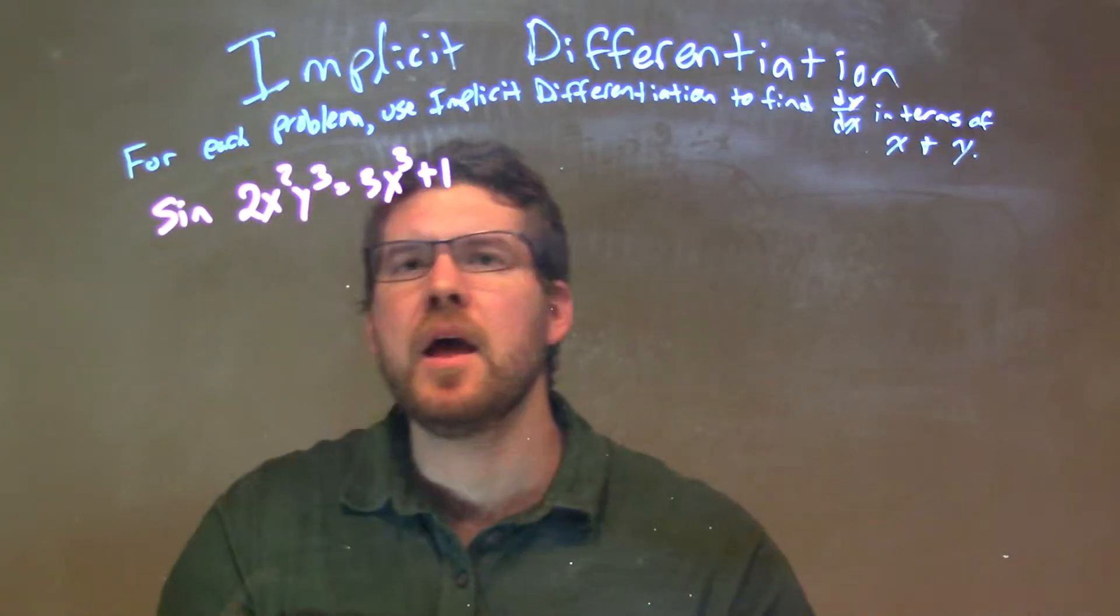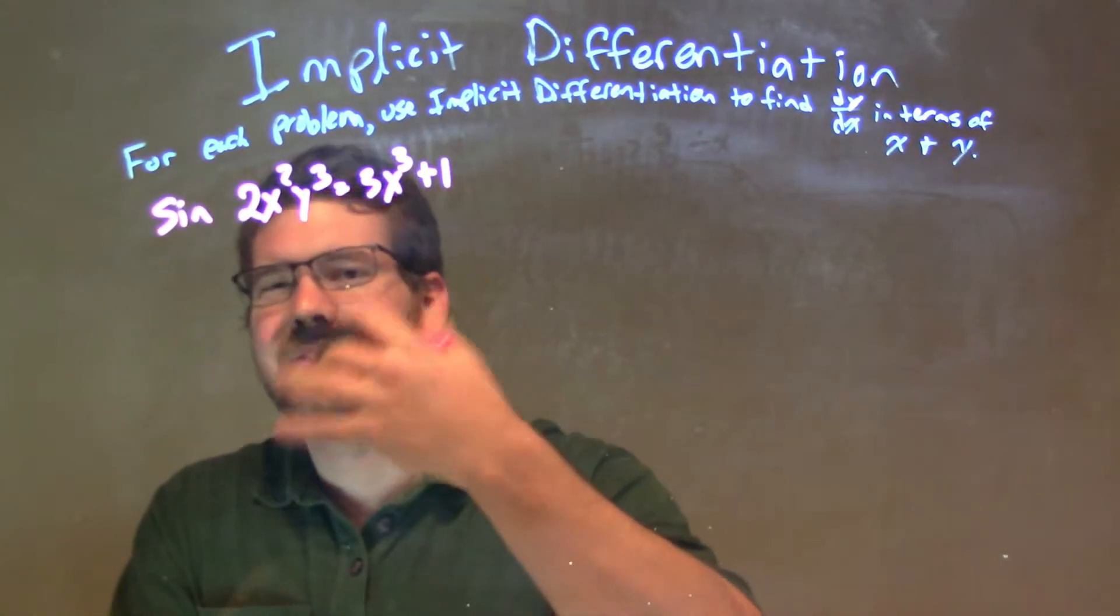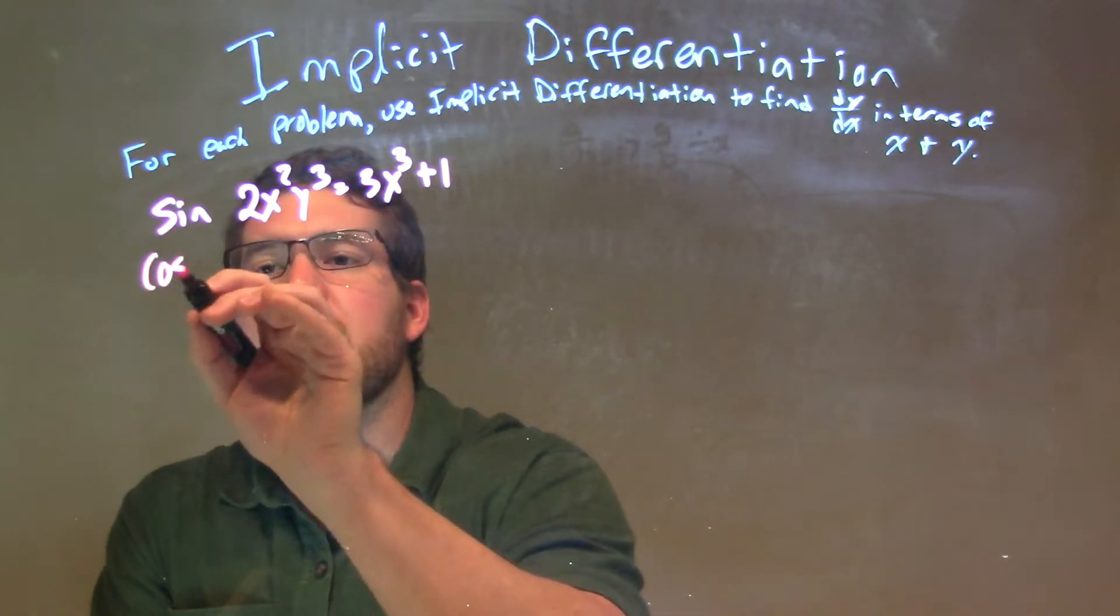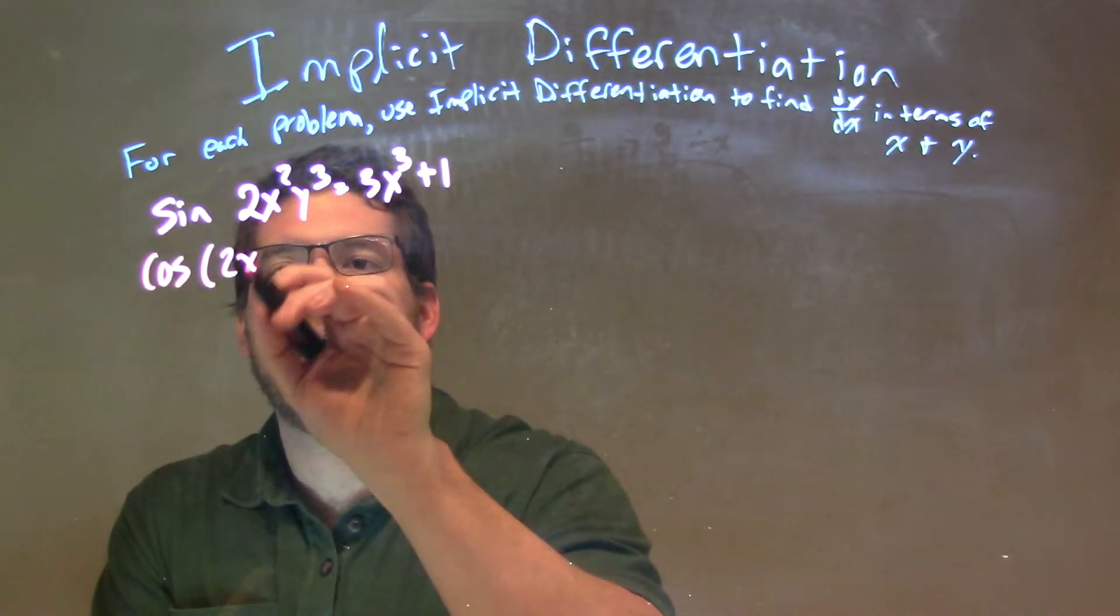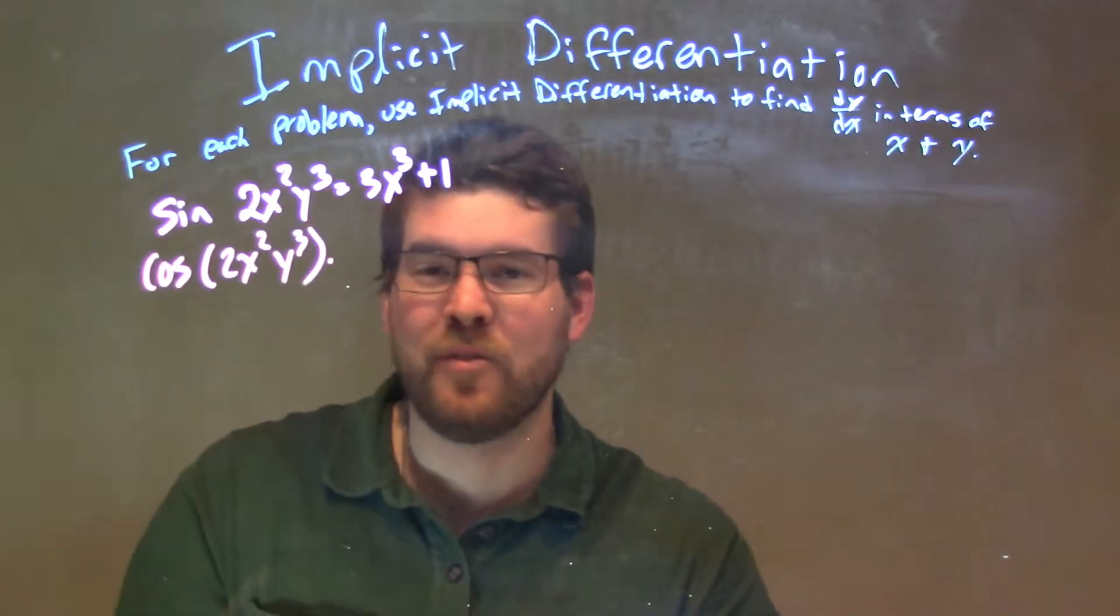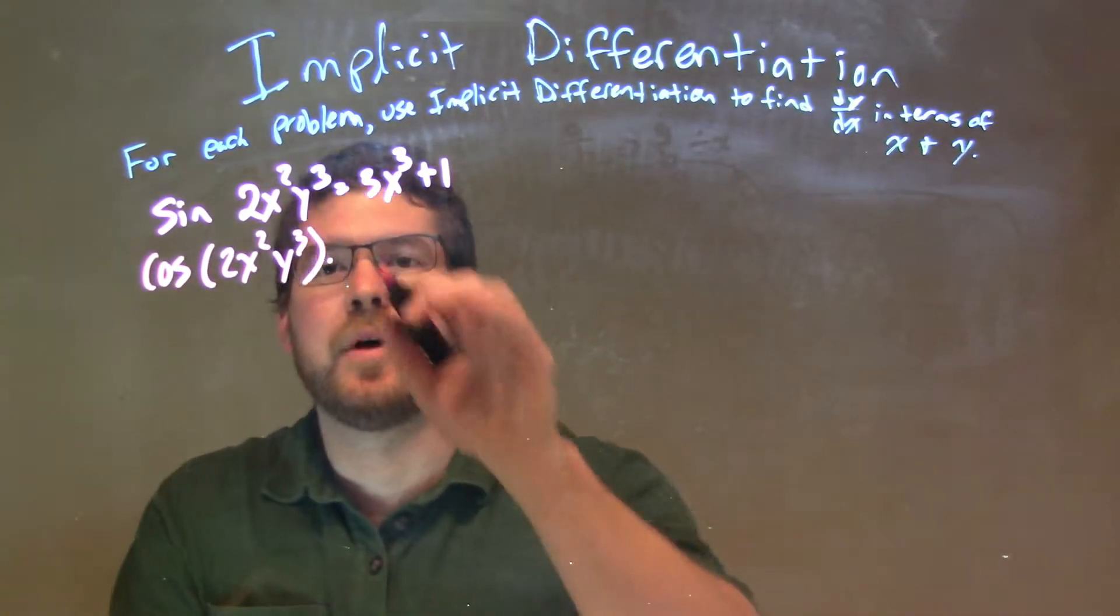Let's derive this using the chain rule on the left-hand side. Derivative of sine is cosine, so cosine. I'll keep the inside the same, 2x squared and y cubed times the derivative of the inside. This is going to involve the product rule.